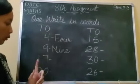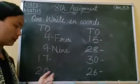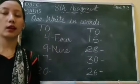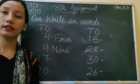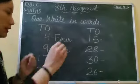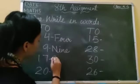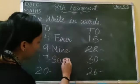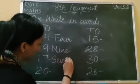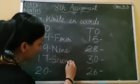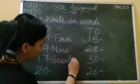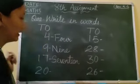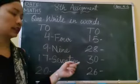Now we have 17. What is the spelling of 17? S-E-V-E-N-T-E-E-N. Seventeen.